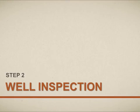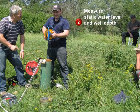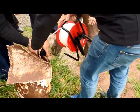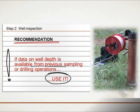Step 2: well inspection. The first thing to do during the second step is to determine the geographical coordinates of each sampling point. Next, use tape and a water level meter to measure the static water level and well depth. This will serve to determine the purge pump's required depth intake. Knowledge of the well's depth helps you to calculate the volume of stagnant groundwater that needs to be pumped from the well prior to sample collection. Information on well depth is sometimes available from previous sampling expeditions or from when the well was drilled originally.